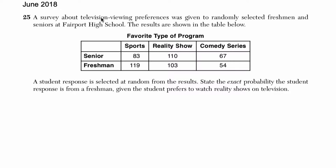A survey about television viewing preferences was given randomly to selected freshmen and seniors at a high school. So here's our seniors and here's what they prefer, here's the freshmen and what they prefer. So we have a two-way frequency table. A student response is selected at random from the results. State the exact probability — so I want a fraction — the student response is from a freshman, given the student prefers to watch reality shows on television.